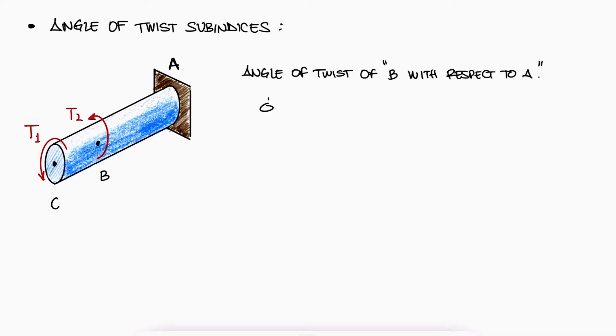We would label this as phi sub AB, from A to B, which means that A is the reference and phi AB is telling us the angle of twist at B.